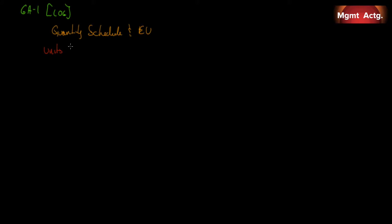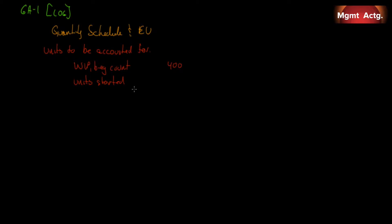We start with units to be accounted for, beginning with our work in process beginning count — how many units are already on the line at the beginning of the period. We have 400. To that we add our units started. Some of those may be completed and some may end up still on the line at the end of the period. So we have to account for 43,000 units total: the 400 that were sitting there and the 42,600 that we started.